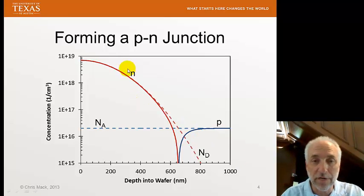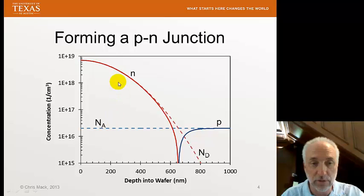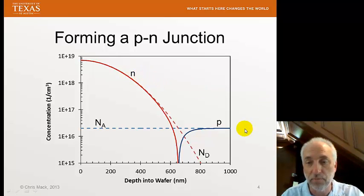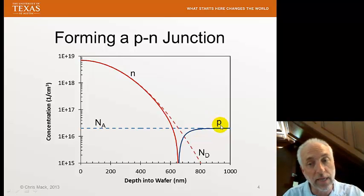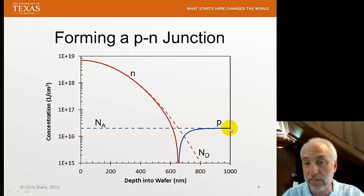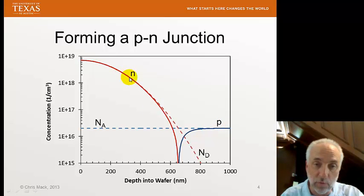When we're in a region where the number of donor dopants far exceeds the number of acceptors by several orders of magnitude, we're dominated by the majority carrier, which in this case will be electrons. On the other side, where the number of acceptor dopants far exceeds the donor dopants, the majority charge carrier will be holes. As a result, p will be approximately equal to the acceptor concentration in that region, and N approximately equal to the donor concentration.